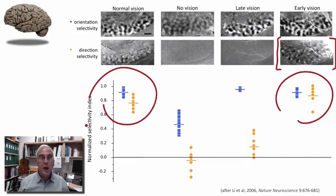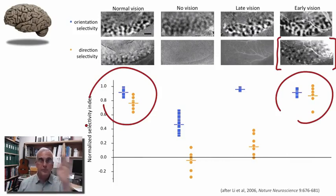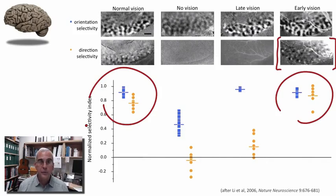These data suggest quite powerfully that the circuits that compute direction selectivity are indeed more sensitive to early vision than are those circuits that self-organize in order to compute orientation selectivity. It suggests that there is a very early critical period in visual cortical development when normal visual experience is essential in order to develop the circuitry that allows us to compute movement to one direction or another. You can imagine how important that is for survival in a world full of moving objects, and indeed, as we move through the world, we generate our own patterns of visual motion in the visual cortex.